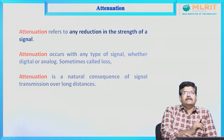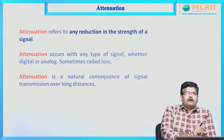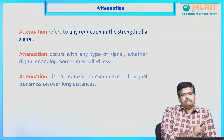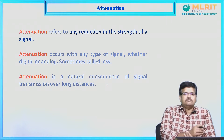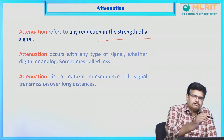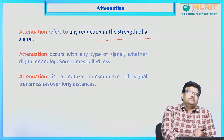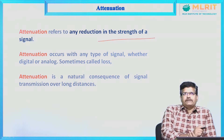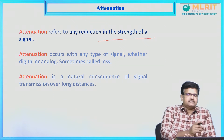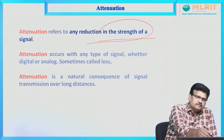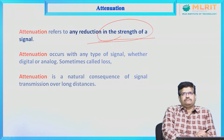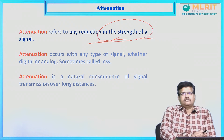Attenuation reduces the strength of the signal. This is one of the important points — attenuation is a drawback of any communication system. In every communication system, we have to minimize the attenuation. This is very important.